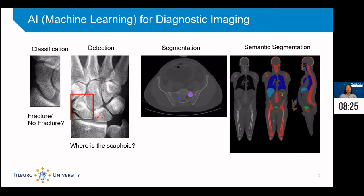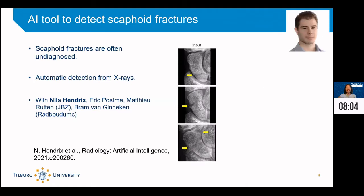Here we have a full-body CT scan, and we can perform semantic segmentation to detect different organs in the body. For example, the red pixels refer to bones and the other pixels are your lungs. I'm going to talk about our project to automatically detect fractures in the scaphoid — a small bone in your wrist. We're using X-ray images of hands and wrists to detect these fractures.